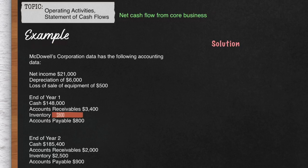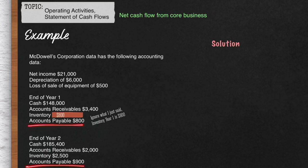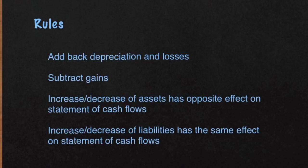In this example we have McDowell's Corporation. McDowell's Corporation had a net income of $21,000, depreciation of $6,000, a loss on sale of equipment of $500, and we have data for Year 1 and Year 2. Cash in Year 1 was $148,000 and in Year 2 was $185,400. Accounts Receivables $3,400 and $2,000. Inventory $1,200 and $2,500. AP $800 and $900. You'll need these amounts to figure out how cash changed throughout the year, more specifically in the Operating Activities section.